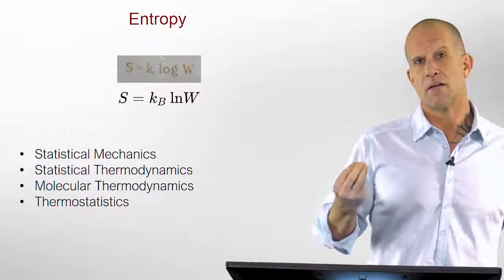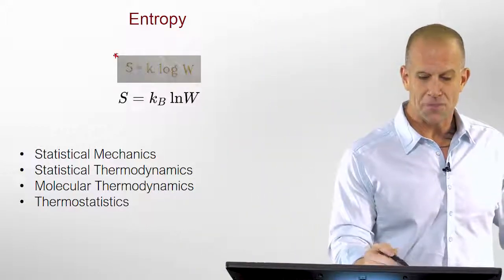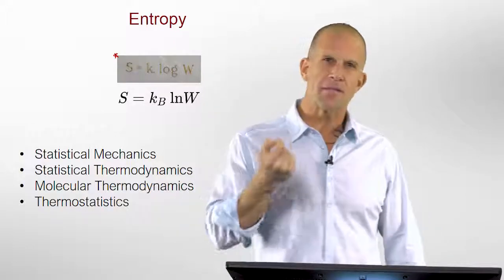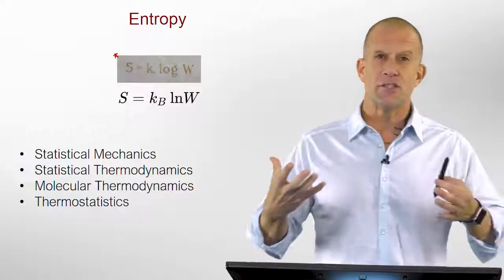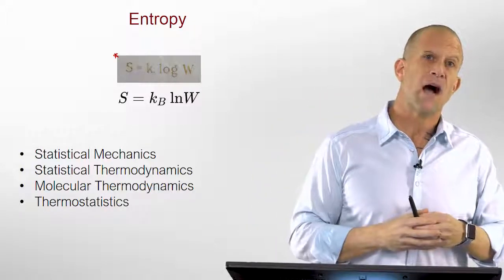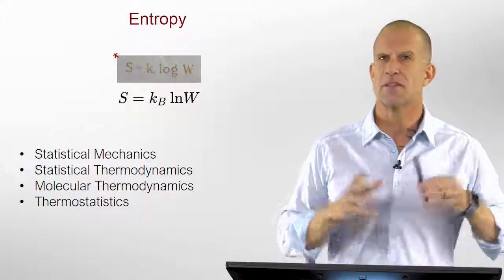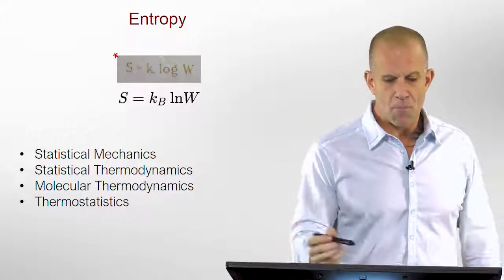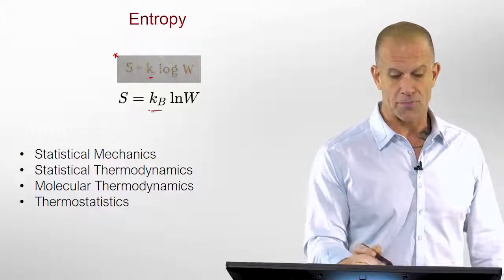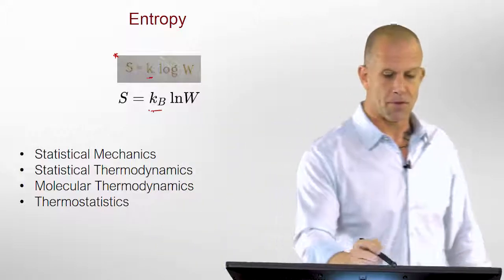However, later on, Boltzmann came along, and this is in fact from his tombstone, and showed that entropy has a fundamental relation to the configurations of atoms or of the microscopic atoms and molecules and particles that we have. It was very controversial at the time, but it's been a huge insight. More modernly, we would write it as not just a constant, but with the Boltzmann constant, where the capital B is in honor of Boltzmann himself.